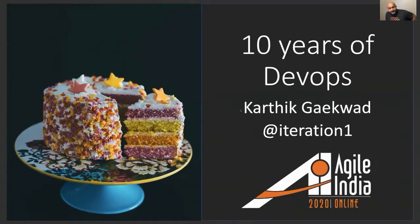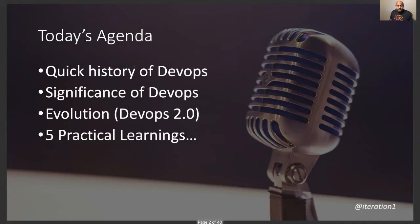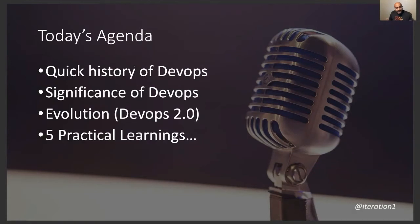Thanks, Hari, and thank you everybody for coming to my talk. Good evening. This is a quick talk on 10 years of DevOps. Quick agenda: we'll go through the history of DevOps, some of the significance of that, what the evolution has been, where we are today, and then the most important part — five practical learnings that you can take back to your own place of work.